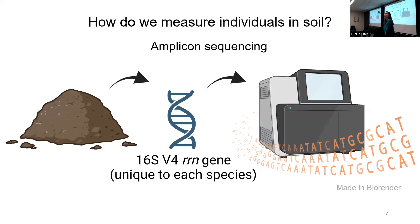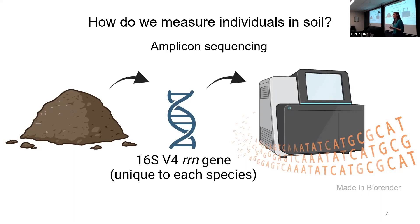Moving on, I wanted to go over how we do research and measure microbial communities in soil. We take soil from the plot or area of interest, extract all the DNA in that soil, and then target a specific marker gene that is unique to each species. This particular gene is called the 16S V4 region of the ribosomal RNA gene — you don't need to remember that, but that's what we use.